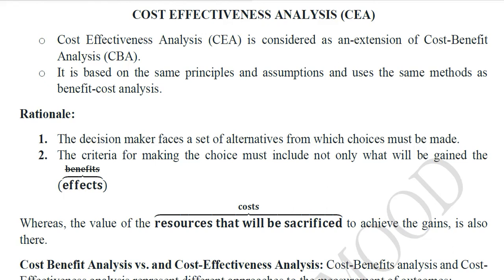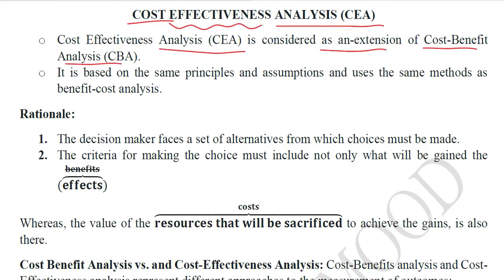There are situations where the benefits are not in monetary or physical terms. In that situation, the benefits are in the form of some effectiveness — that is, they are intangible, appearing in the form of satisfaction or awareness. In these situations, we use another variant known as cost effectiveness analysis (CEA), avoiding CBA because the benefits are not physical in nature.